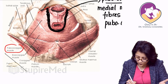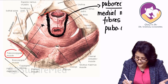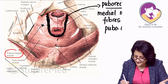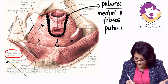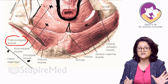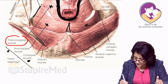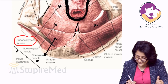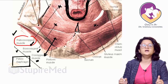We have the pubococcygeus muscle. Then there is another sheet extending from the tendinous arch on the ileum bone, going and attaching to the coccyx — this is the iliococcygeus muscle. And then we have the coccygeus muscle, same as ischiococcygeus, extending from the ischium bone to the coccyx. So the pelvic diaphragm is composed of pubococcygeus, iliococcygeus, and the coccygeus muscle.